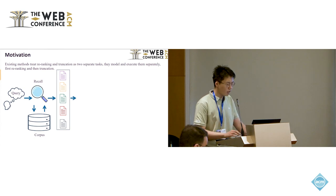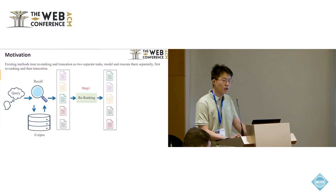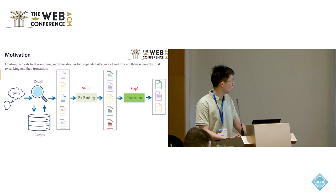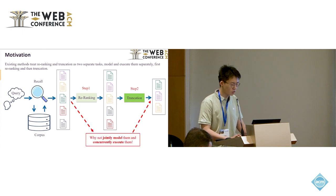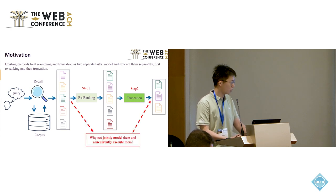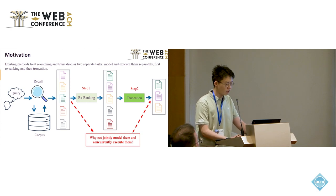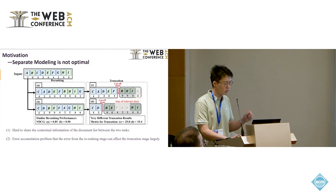Existing methods treat re-ranking and truncation as two separate tasks. They model them and execute them separately. First, re-ranking and then truncation. The main research question in this paper wants to study is whether re-ranking and truncation can be modeled by a joint model and executed concurrently.